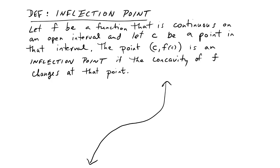So let f be a function that is continuous on an open interval and let c be a point in that interval. It is important that this does have to be a point where it's an inflection point, so it has to be a point on the graph. The point (c, f(c)) is an inflection point if the concavity of f changes at that point.